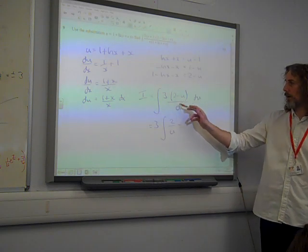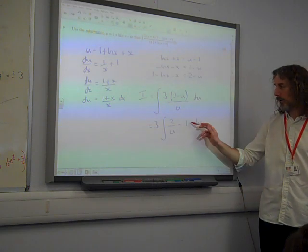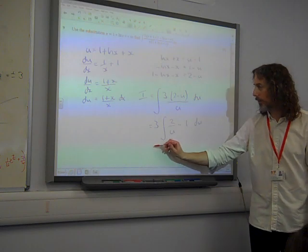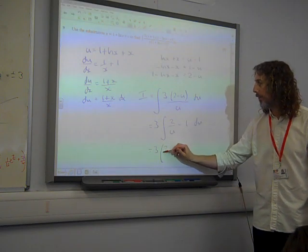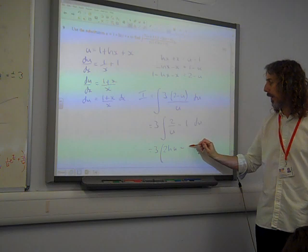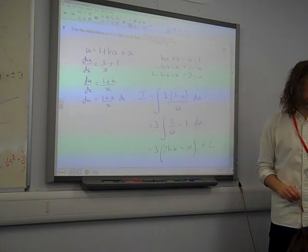That's 2 over u minus u over u, so 2 over u minus 1, which gives us 3 lots of 2 ln(u) minus u plus c.